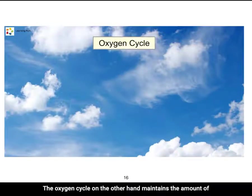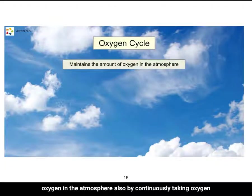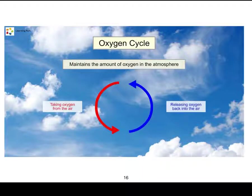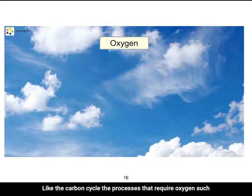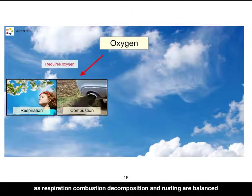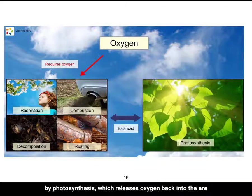The oxygen cycle maintains the amount of oxygen in the atmosphere, also by continuously taking oxygen from the air and releasing it back. Like the carbon cycle, the processes that require oxygen — such as respiration, combustion, decomposition, and rusting — are balanced by photosynthesis, which releases oxygen back into the air.